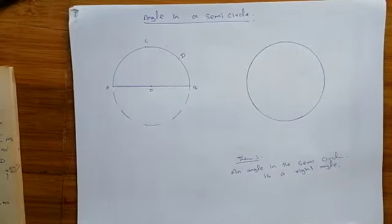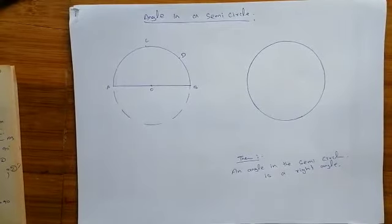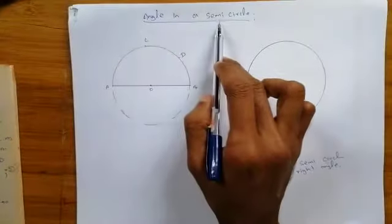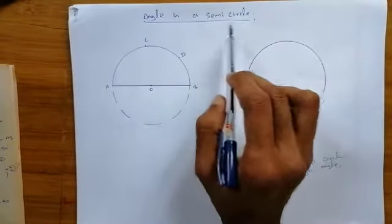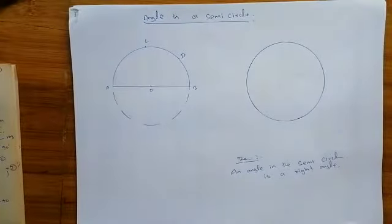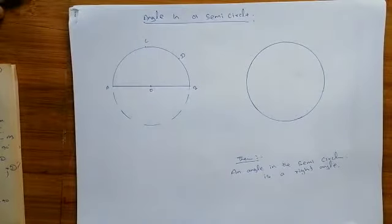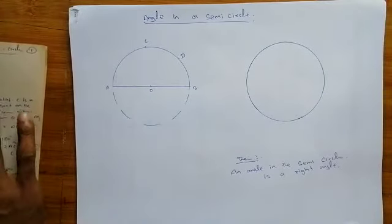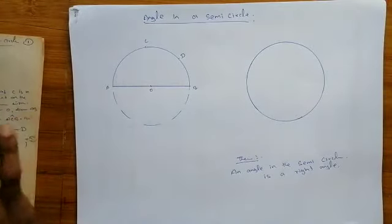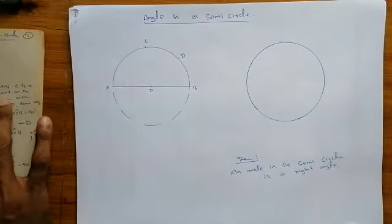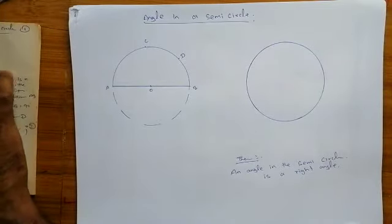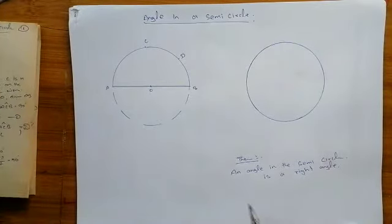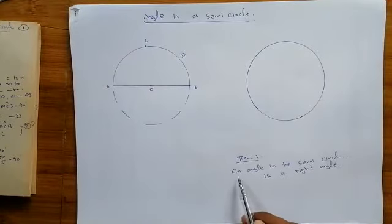Students, the third part of the theory: angles in the same semi-circle. We can go for the theory directly because you have more knowledge on this theory. All the theories are connected with the first part. So the third theory is: